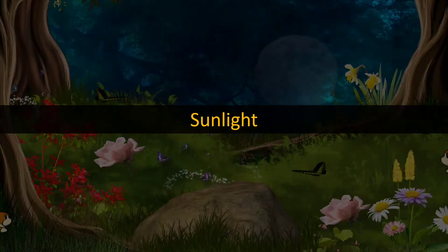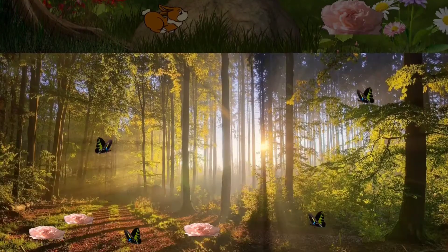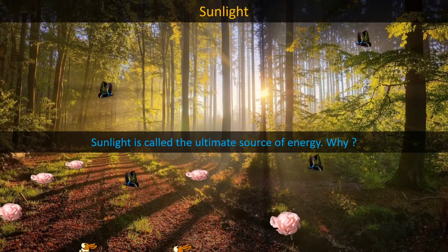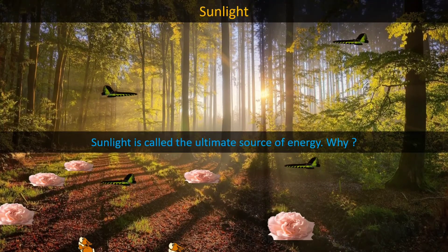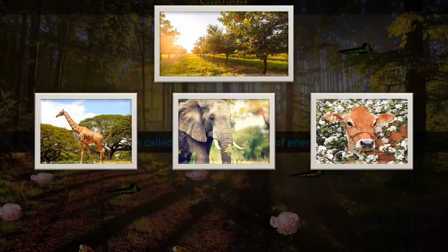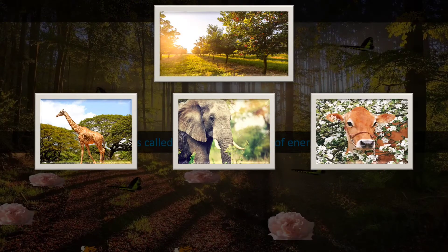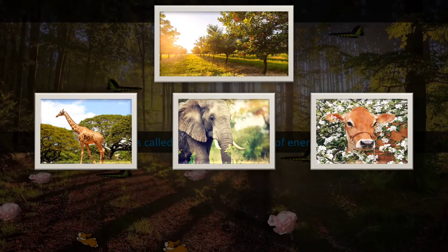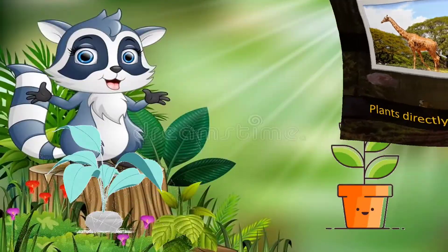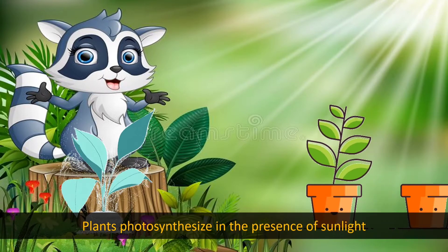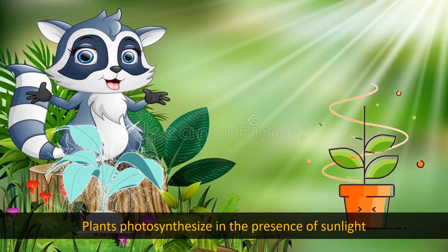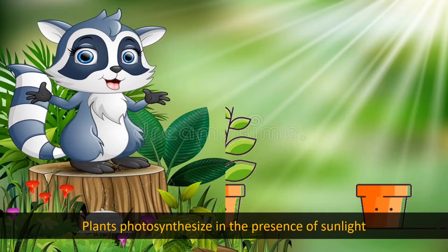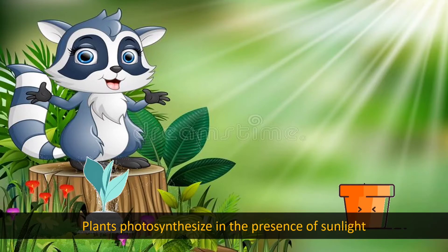Sunlight. The sun is the main source of energy. Plants, directly or indirectly, are the source of food for all organisms, but they can't grow without sunlight. They photosynthesize in the presence of sunlight.